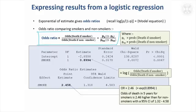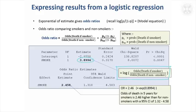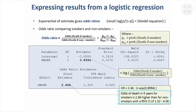If you've ever done any gambling, things get expressed in terms of odds — basically the probability of something happening over it not happening. So the odds ratio is the odds of death if you're a smoker divided by the odds of death if you're a non-smoker. That's what we get if we take the exponential of the logit estimate. SAS conveniently calculates this for us — we get an odds ratio of 2.458 along with a 95% confidence interval. So we can say the odds of death at five years is 2.46 times higher in smokers compared to non-smokers.